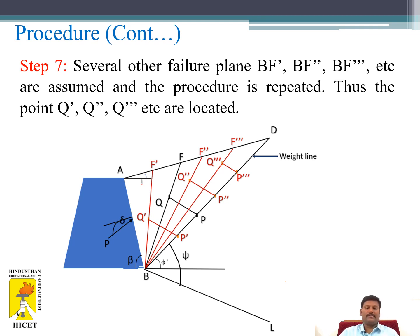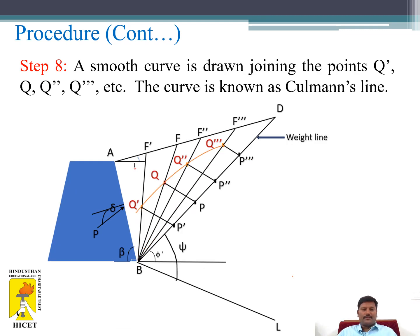The procedure is repeated to get points Q'', Q''' for several failure planes. A smooth curve is drawn joining the points Q', Q, Q'', Q''' etc. That curve is known as Cullman's line.